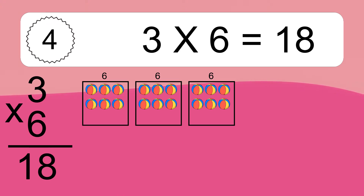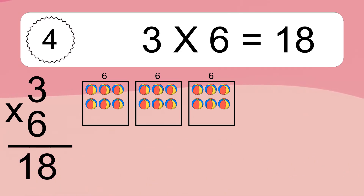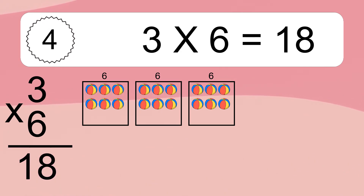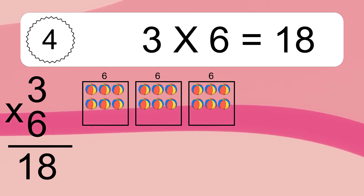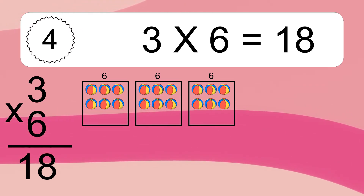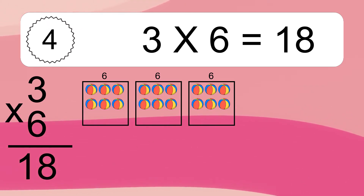We have 8 boxes, and each box has 6 colorful balls inside. If you count all the balls in all the boxes together, you will have 3 times 6 balls. This equals 18 balls.